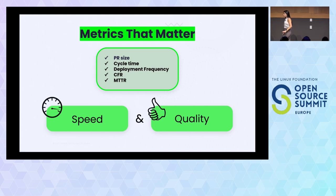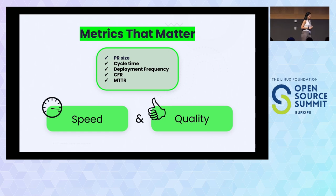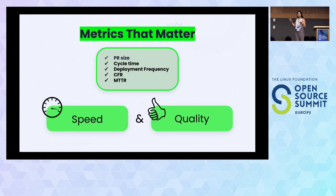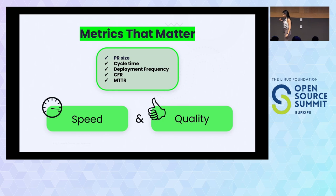You can start to measure these metrics today by monitoring webhook events on your repos and your organization. There are many free plugins to help you monitor that. You can also use a spreadsheet, or plugins with Jira or whatever product management tool you're using. You can also use free tools available in the market — for example, Jellyfish, LinearB, and others.